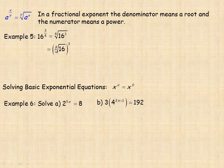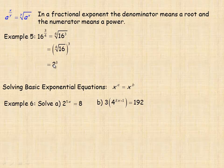The fourth root of 16 is two, because two times two times two times two equals 16. So we now have two cubed, which equals eight — two times two times two is eight.